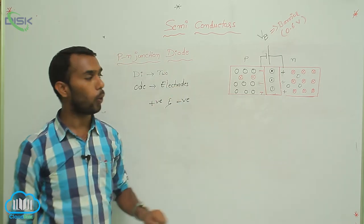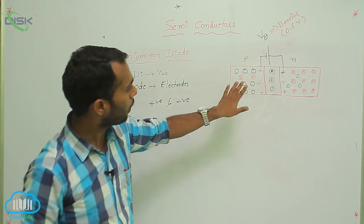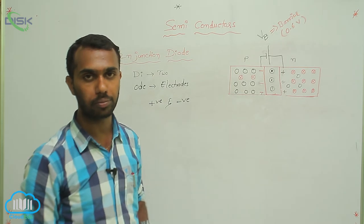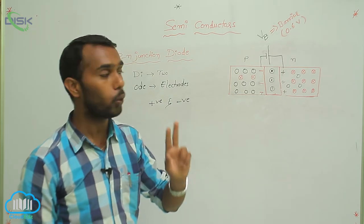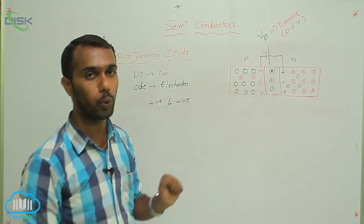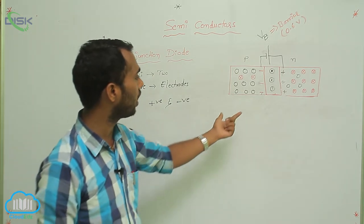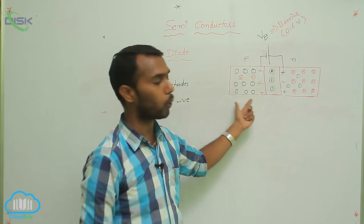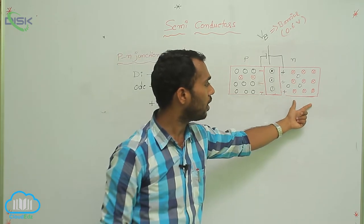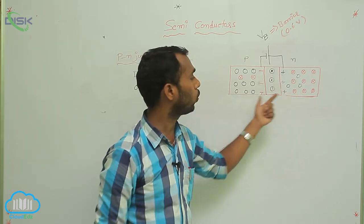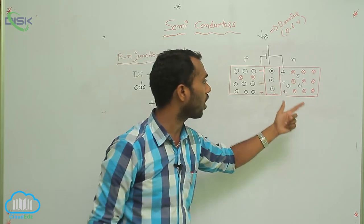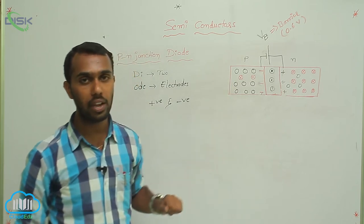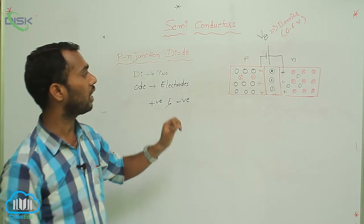Now, P-N junction diode. That is a P-N junction diode. Di means two — two electrodes are there: positive electrode and negative electrode. Two electrodes are there. That's why its name is P-N junction diode.